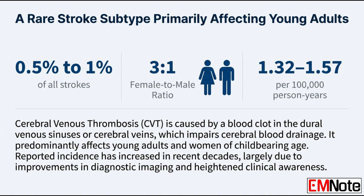The fundamental difference from a standard ischemic stroke is the plumbing. In CVT, you have a blood clot in the dural venous sinuses or the cerebral veins themselves — so it's an outflow problem. It obstructs cerebral blood drainage. The immediate and most dangerous consequence is venous infarction and often rapidly rising intracranial hypertension. That pressure buildup explains a lot of the variable presentation we see.